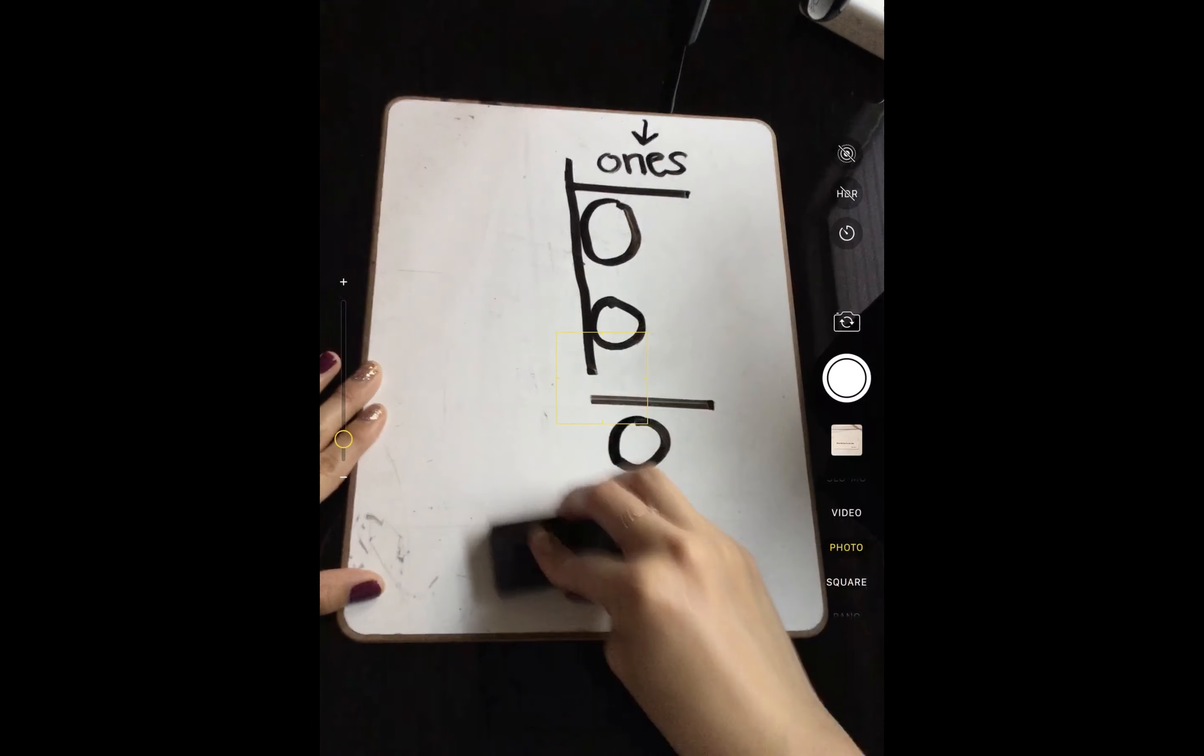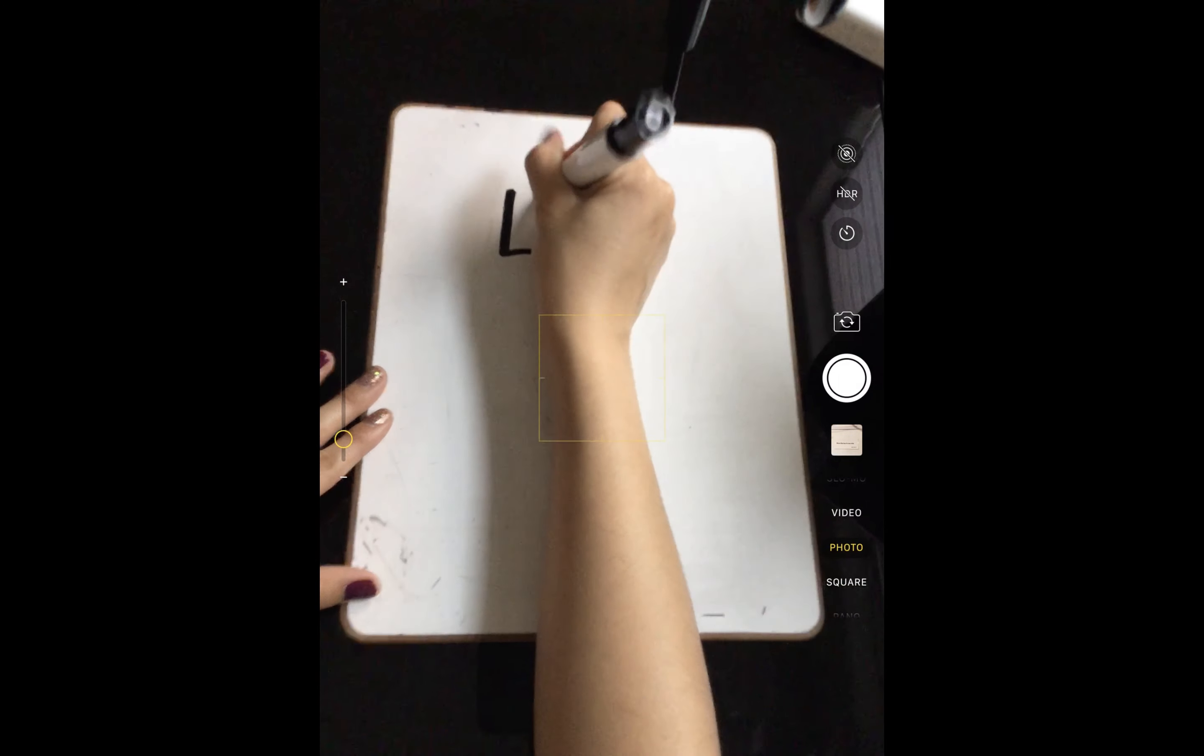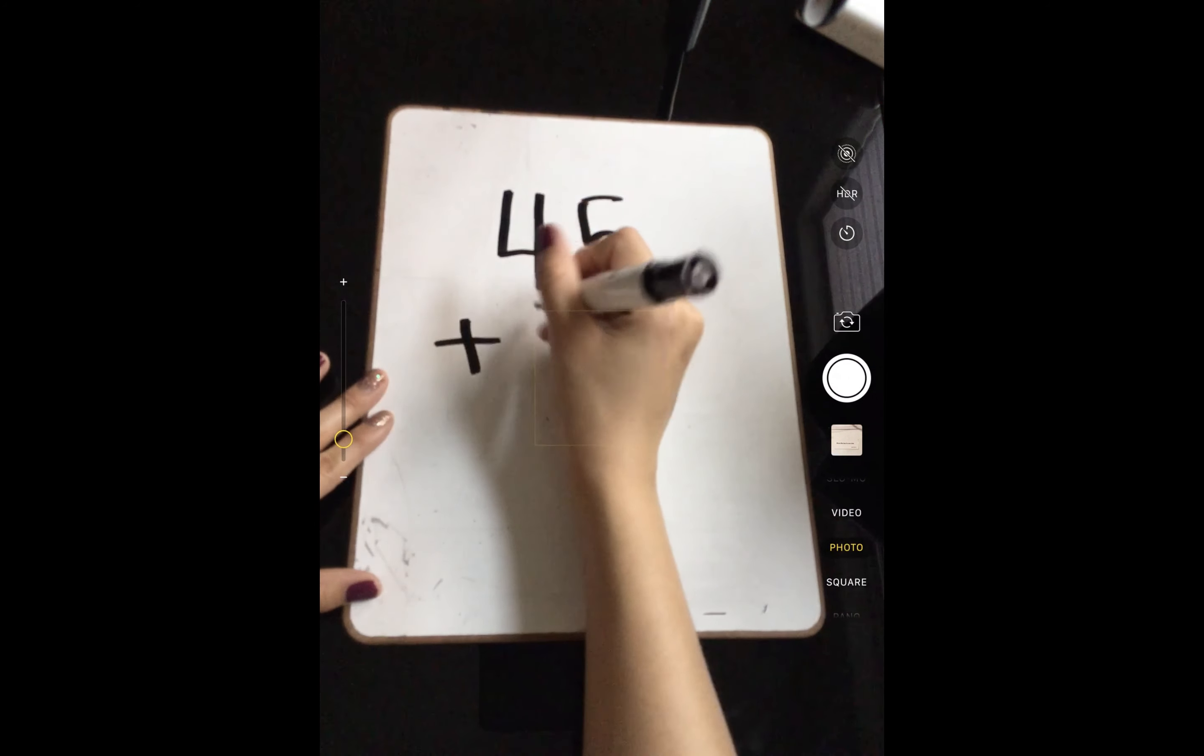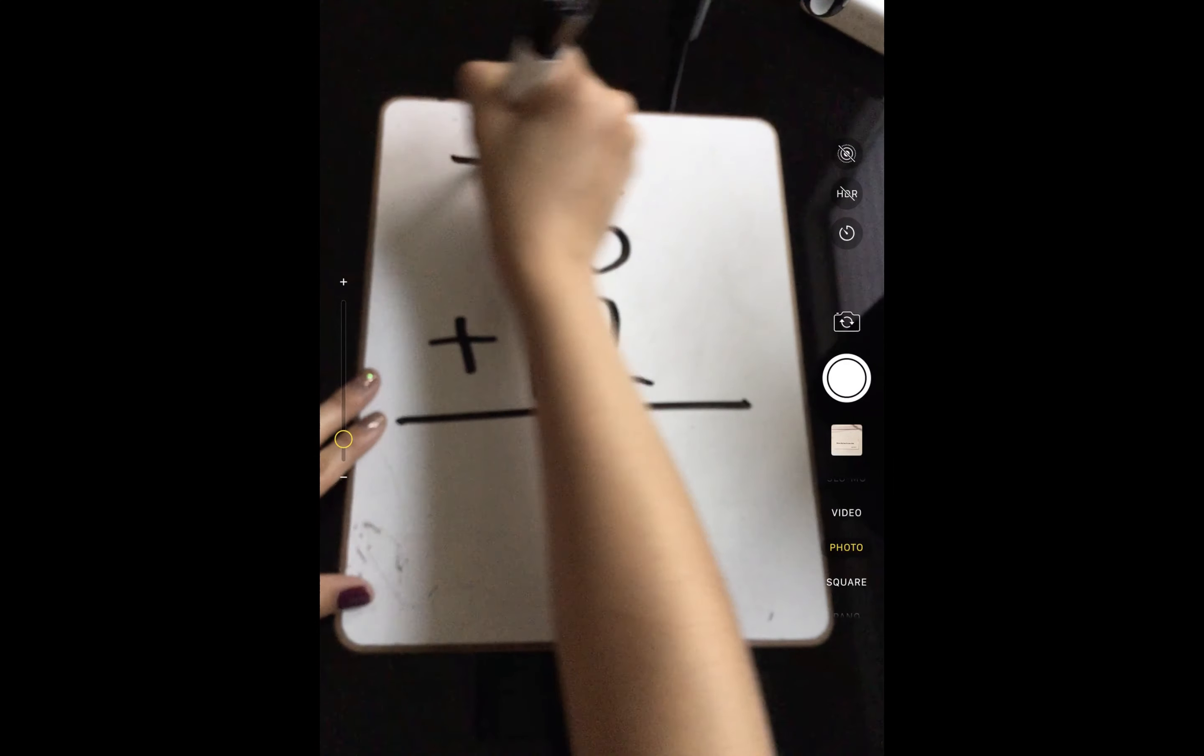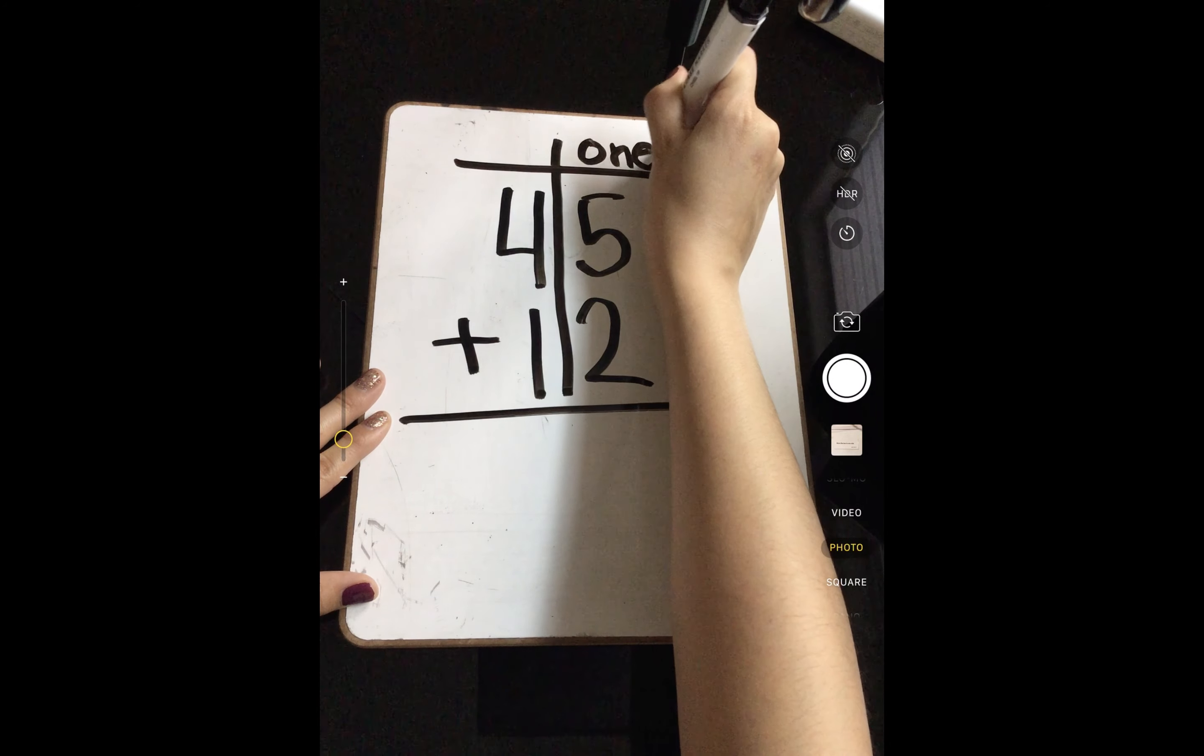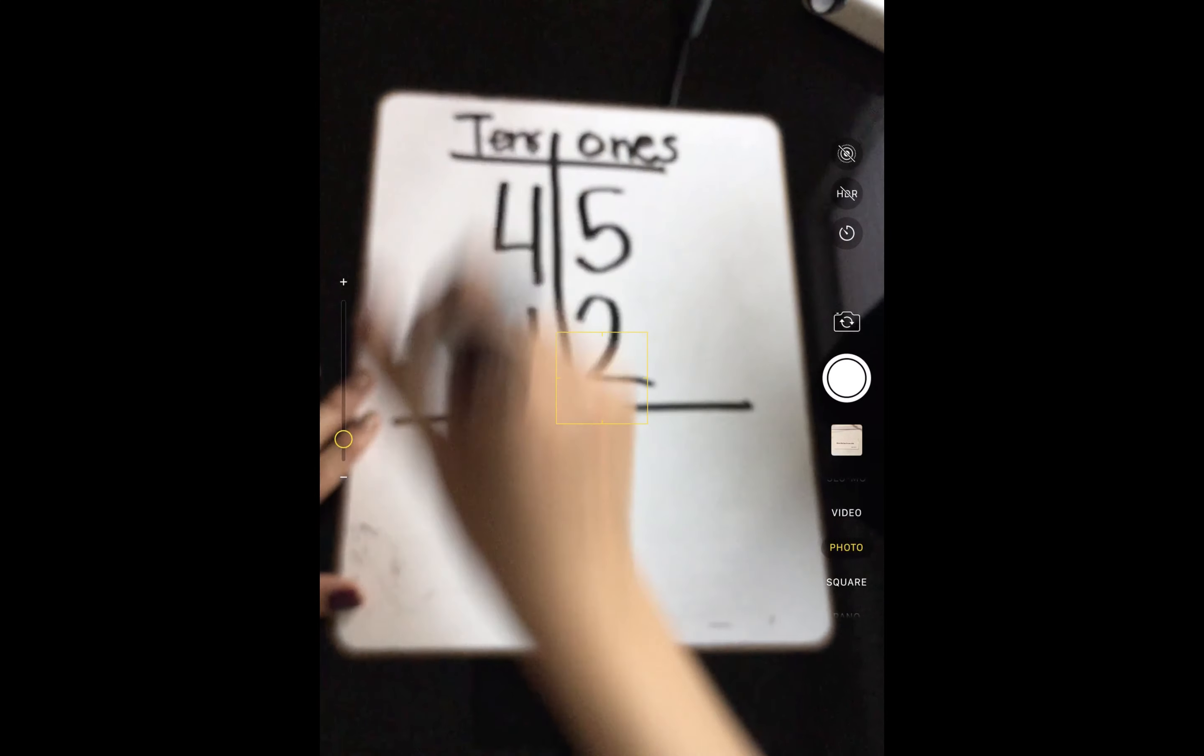All righty, so let's try another one. This one is going to be a little more difficult. We're going to do 45 plus 12. So remember, if you need to draw this T, that's okay. Just remember, you have your ones, and sometimes you might have to write this number out or the word out because our O can look like a 0, and we don't want that. So we have our tens and our ones here.